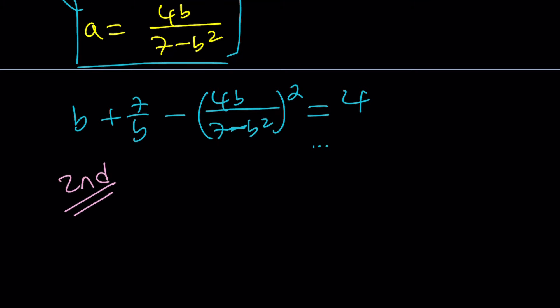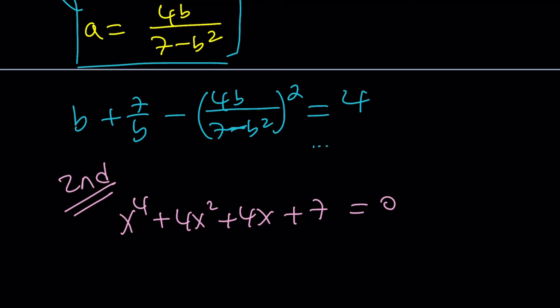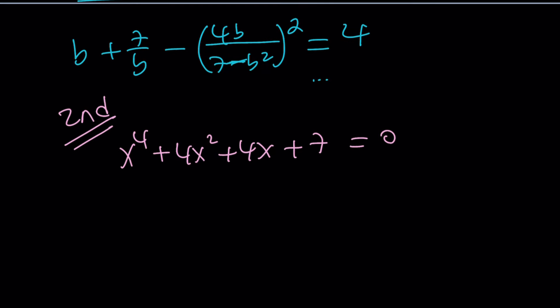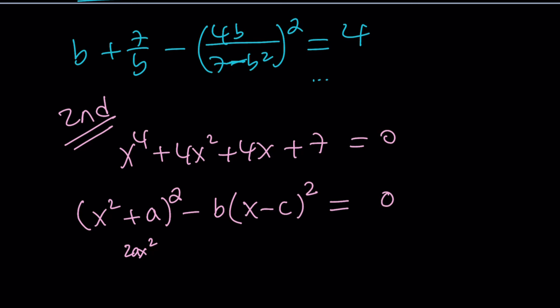The second method involves something special. We want to write our equation as a square minus another square — a difference of two perfect squares. I'm going to write it as x squared plus a squared minus b times x minus c squared equals 0. Now we have three variables, but that shouldn't discourage you — hopefully we'll get something nice. In this case, I'm looking for a, b, c to be integers.